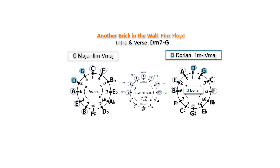Let's analyze pop songs to identify 1-4 chord progressions in the Dorian mode. In the intro and verse of Another Brick in the Wall by Pink Floyd, the chords D minor 7 and G major form a 2-5 progression in C major. However, since the song starts on D minor 7, we can treat D as 1 and G major as 4, identifying the progression as D Dorian.